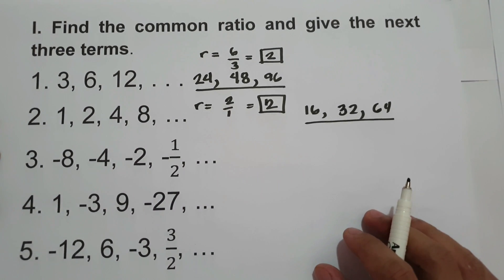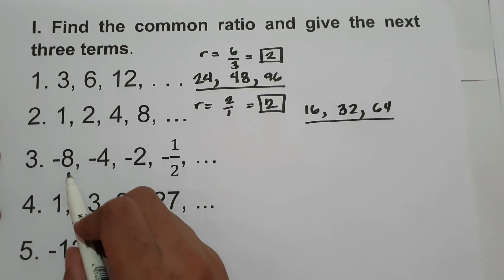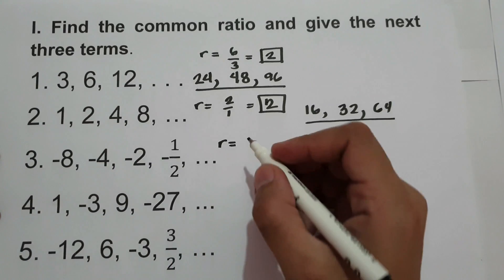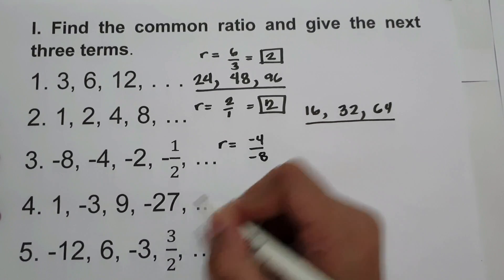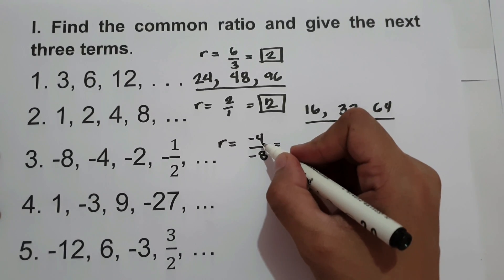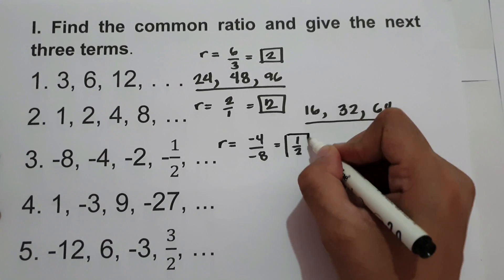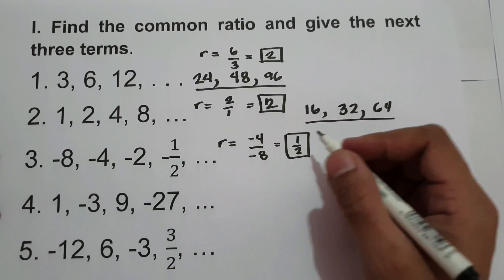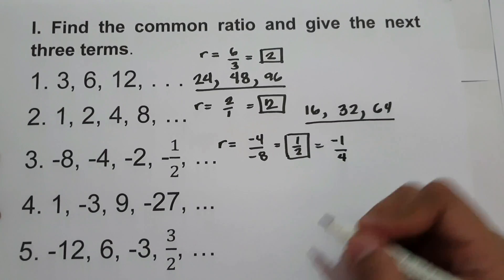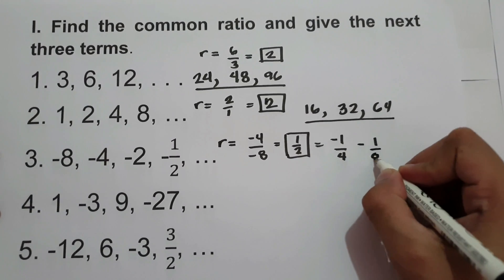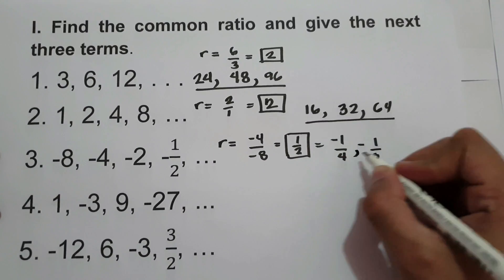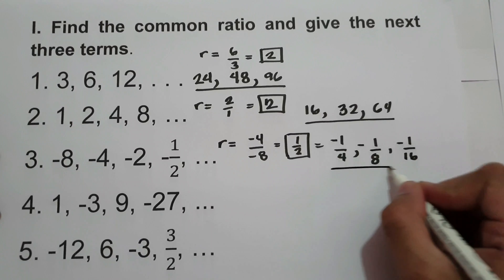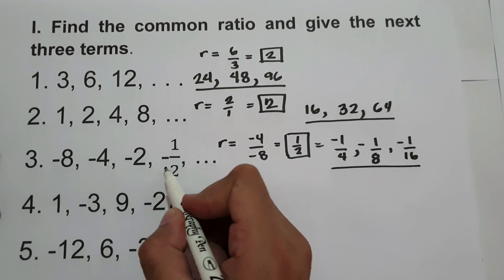What about number 3? Go ahead and find the common ratio and give the next 3 terms. We have negative 8, negative 4, negative 2, and negative 1 half. Let us find the common ratio: negative 4 divided by negative 8 is positive 1 half. So the next 3 terms are: 1 half times negative 1 half is negative 1 fourth; negative 1 fourth times 1 half is negative 1 over 8; and negative 1 over 8 times positive 1 half is negative 1 over 16. So these are the next 3 terms.